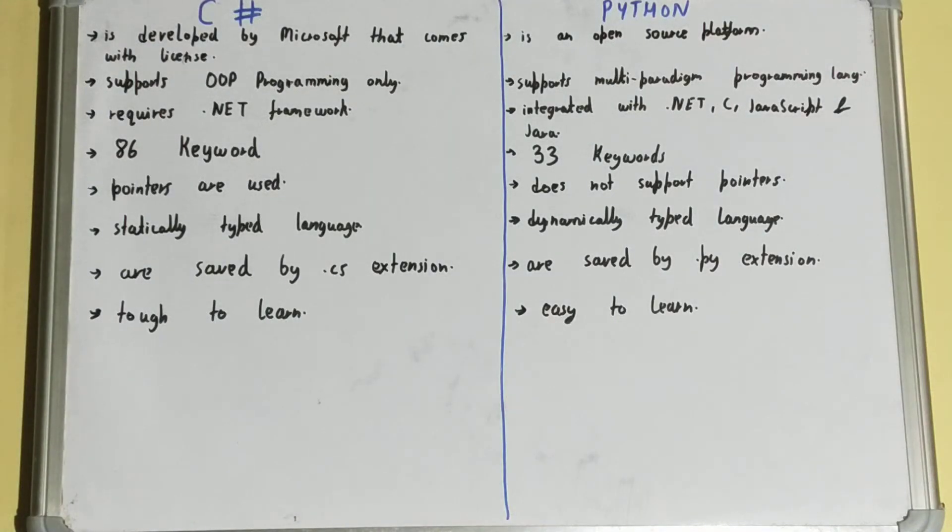Hello friends, in this video I'll be helping you with the difference between C# and Python language. So talking about C# language, it is an object-oriented programming language.